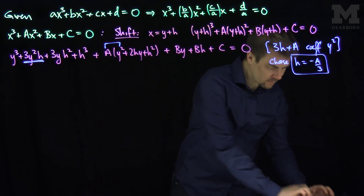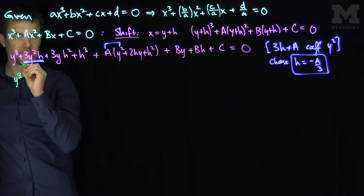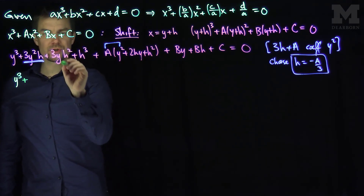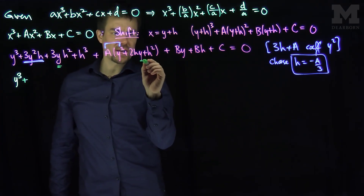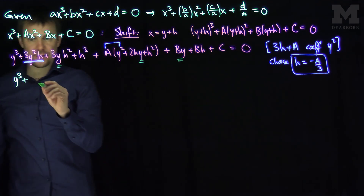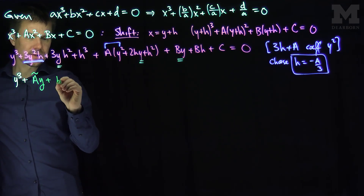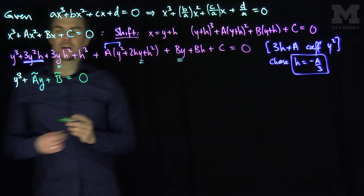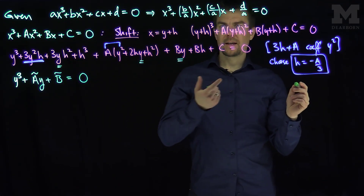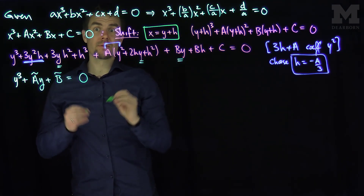So if we choose h = -A/3, the y² terms in this equation will vanish and we'll have a new equation. Our new equation for y will be y³ — there are no y² terms — plus a combination of terms that just have a y in them, which depend on A/3. I'll call that ã·y + b̃ = 0. So by shifting the equation, I've eliminated the y² term. If I can solve for y, then I'll be able to find x. So now I'm going to solve the equation for y.